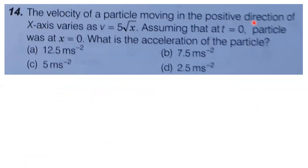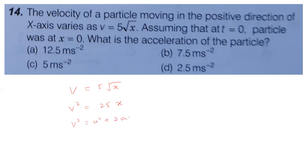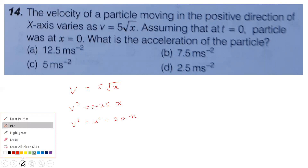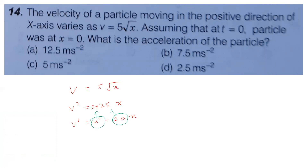Fourteenth question: velocity of particle moving in positive x direction varies as v equals 5 root x. At t equals 0, particle is at x equals 0. Find acceleration. Squaring: v squared equals 25x. Comparing with v squared equals u squared plus 2ax, with u equals 0: 2a equals 25, so a equals 12.5 meter per second square. Option A is correct, acceleration is 12.5 meter per second square.